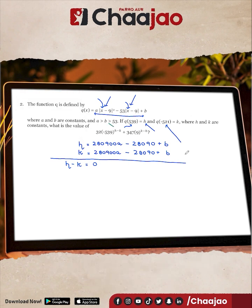So I'm going to put h minus k as zero, and any number raised to the power zero is always one. So 1 times 32 should be just 32, plus 347 times 9 raised to the power k minus h.